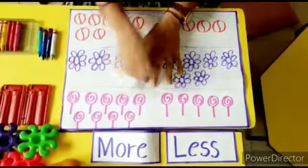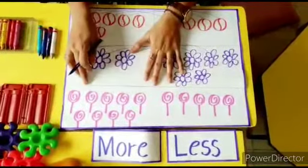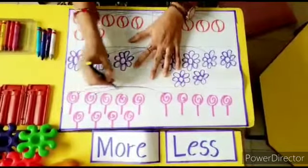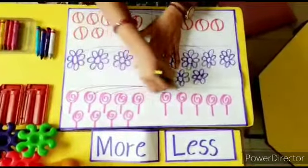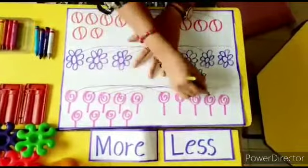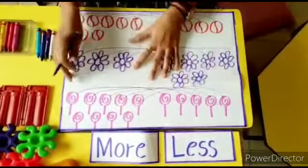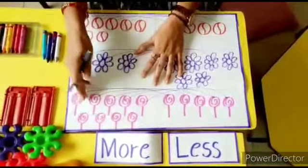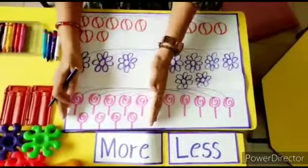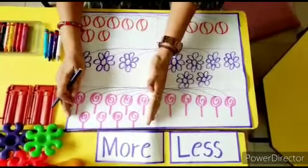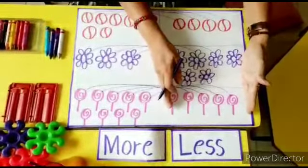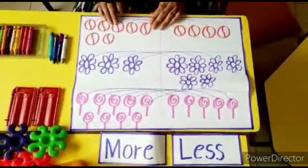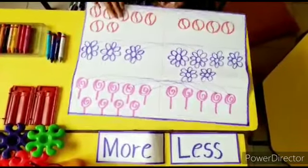In this group the extra flowers are remaining, so this group has more flowers and this group has less flowers. If we compare the set of lollipops in the same one-to-one comparing manner, these extra lollipops are left in this group. So this set has more lollipops and this set has less lollipops. It is a quantity-based or number-based concept.